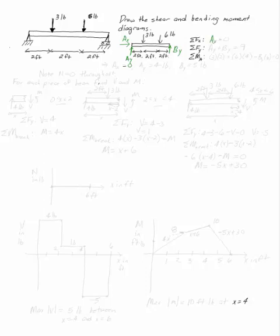Sum of the forces in X tells me that AX equals 0. Sum of the forces in Y says AY plus BY is equal to 9. And the sum of the moments at A gives me 3 times 2 plus 6 times 4 minus BY times 6 equals 0.